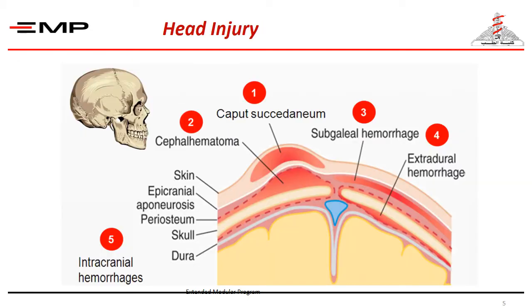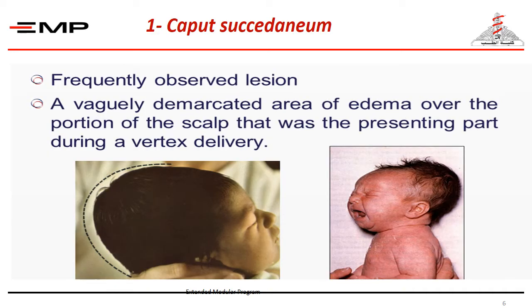Number one: head injuries. This figure shows the sites for different types of head injury: number one, caput succedaneum; number two, cephalhematoma; number three, subgaleal hemorrhage; number four and five, intracranial hemorrhage including extradural and other types. Caput succedaneum is the most frequently observed lesion and the most benign — a vaguely demarcated area of edema over the portion of the scalp that was the presenting part during vertex delivery.